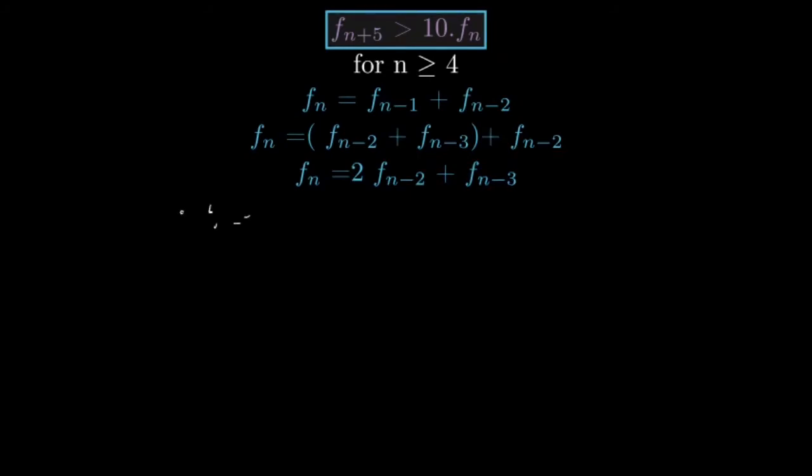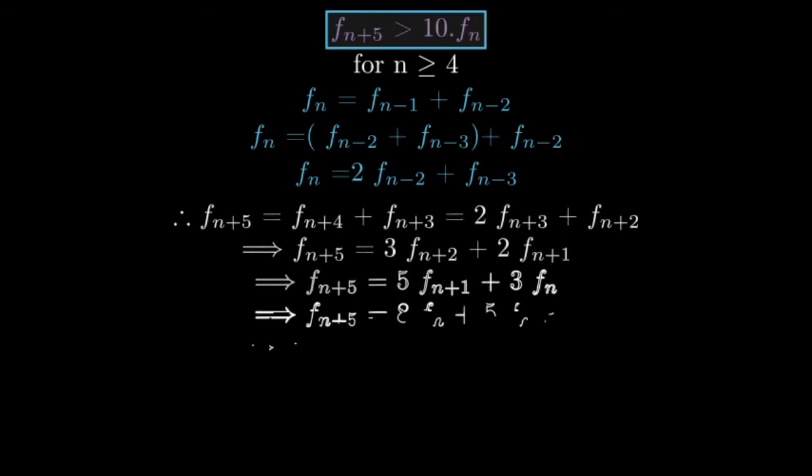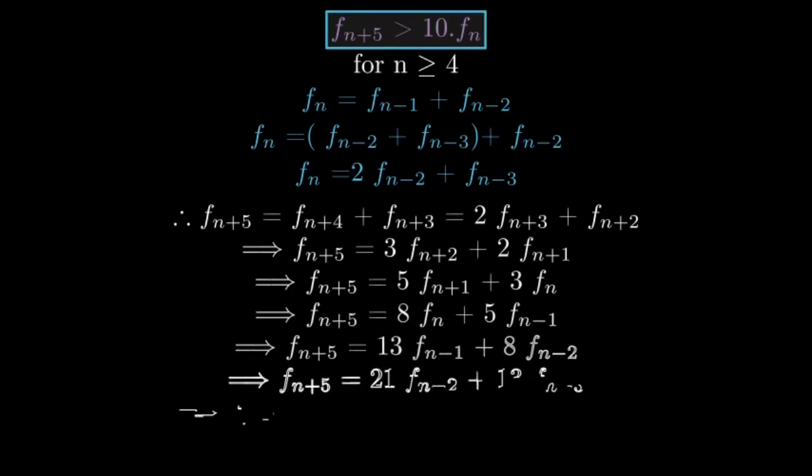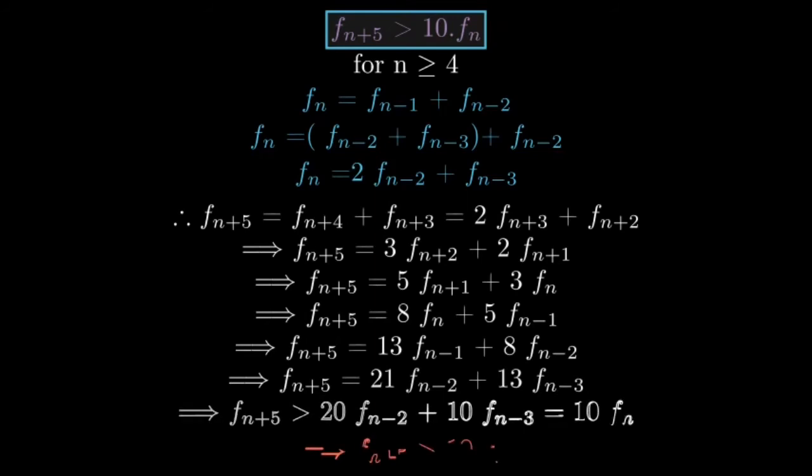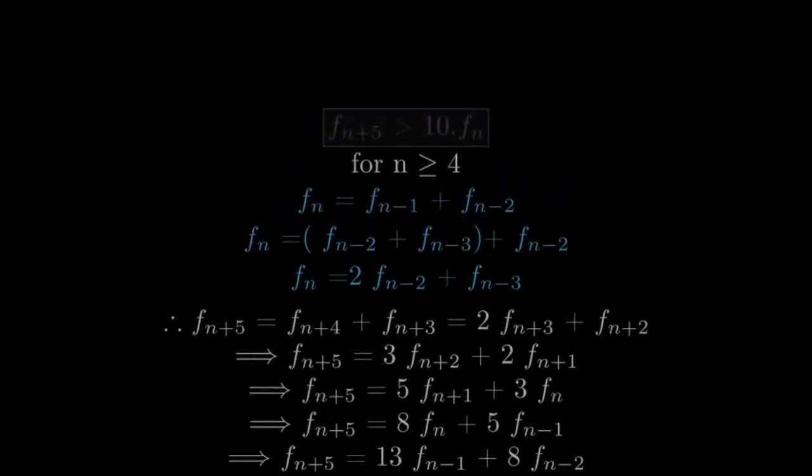Therefore, for f_{n+5}, we can simply write that down as the following, which finally gives us 21 f_{n-2} plus 13 f_{n-3} in terms of f_{n-2} and f_{n-3}, which is clearly greater than 20 f_{n-2} plus 10 f_{n-3}, which is actually 10 times f_n. Great! We have thus established the result.